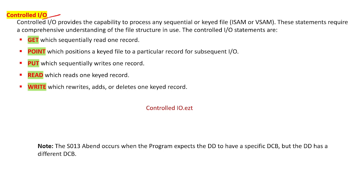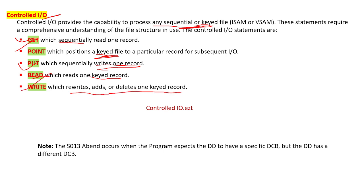Control input/output provides the capability to process any sequential or keyed file. We can process any record or process the file sequentially one by one. Key statements include: GET to read a record sequentially, POINT to position the record in a keyed file, PUT to write one record into the output file, READ to read a keyed record, and WRITE to rewrite, add, or delete one keyed record.